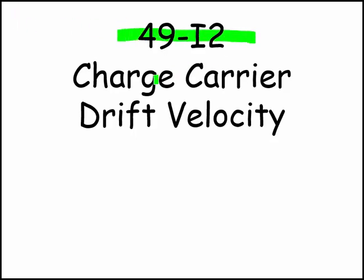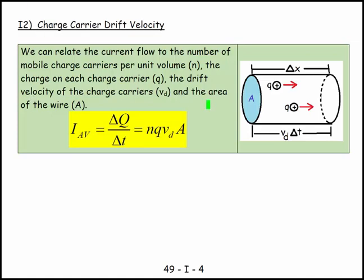Welcome. This is 49i2 and the title is charge carrier drift velocity. We're going to look at a section of wire with a cross-sectional area A, a length delta X, and positive charges traveling away from the positive terminal of the battery around the circuit towards the negative terminal. We'd like to get an idea of how quickly, for a DC circuit with reasonable numbers, those charge carriers travel.